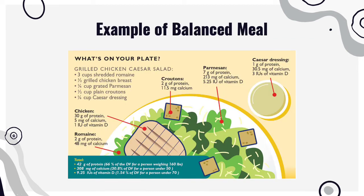Here's an example of a balanced meal. A grilled chicken Caesar salad provides 42 grams of protein, 300 milligrams of calcium, and 9.25 international units of vitamin D. You could easily hit the recommended daily values of calcium, vitamin D, and protein by eating three balanced meals a day and getting about 10 to 15 minutes of sun, which gives you enough vitamin D for the day. By eating healthy and eating enough each day, you can typically hit the marks without it being a huge math equation.